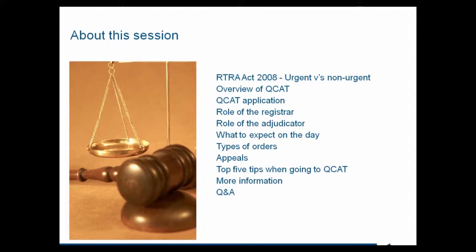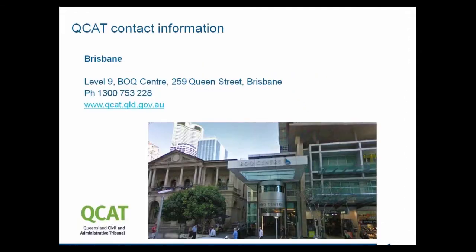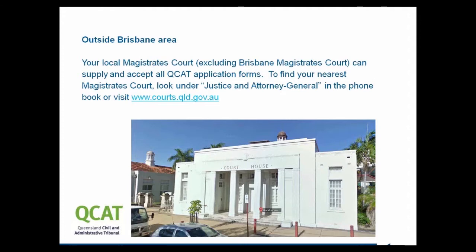Any questions submitted today — and we've also received some email questions prior to the session — will be addressed at the end. Before we start, I'd like to let everyone know the Tribunal's contact details. In Brisbane it's Level 9 at the Bank of Queensland Centre at 259 Queen Street. The phone number for QCAT is 1300 753 228 and their website is qcat.qld.gov.au. If you're outside the Brisbane area, go to your local Magistrates Court — find it at courts.qld.gov.au or in the phone book.